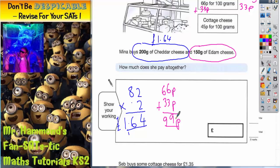99 pence, or in other words, £0.99. Finally, it says how much does she pay altogether? Now, 'altogether' is a posh word for the total, so we need the total of the £1.64 for cheddar and the 99 pence for edam.